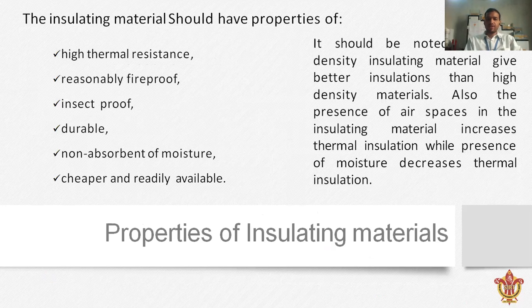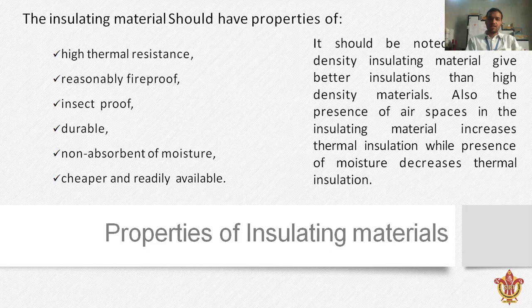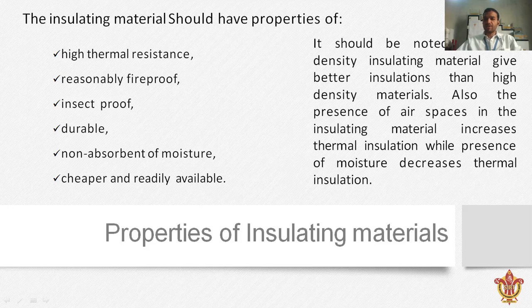The insulating material should have the following properties: high thermal resistance, be fireproof, insect-proof, durable, non-absorbent of moisture, and be cheaper and readily available. It should be noted that low-density insulating material gives better insulation than high-density material. The presence of air space in the insulating material increases thermal insulation, while the presence of moisture decreases thermal insulation.